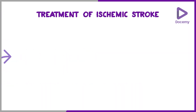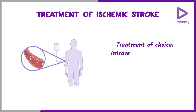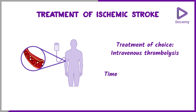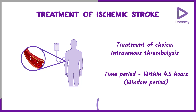The treatment of choice in an ischemic stroke is intravenous thrombolysis. However, intravenous thrombolysis can be done only within the first 4.5 hours, and this is called the window period.